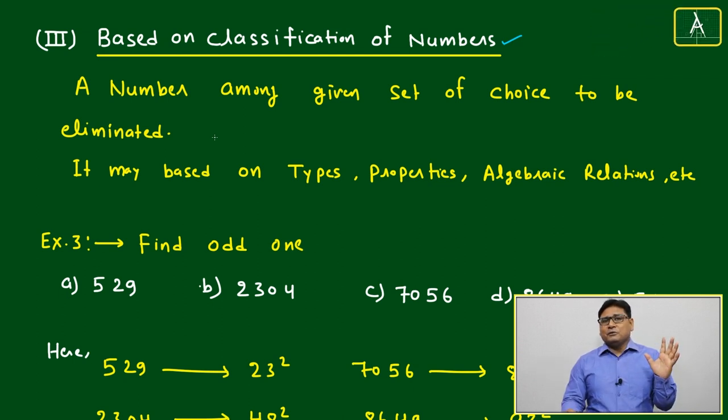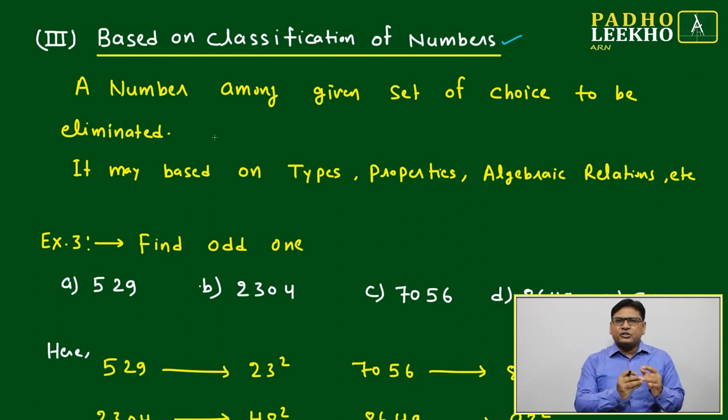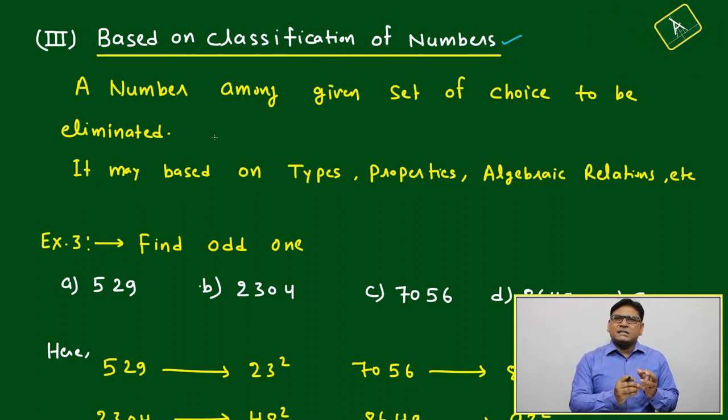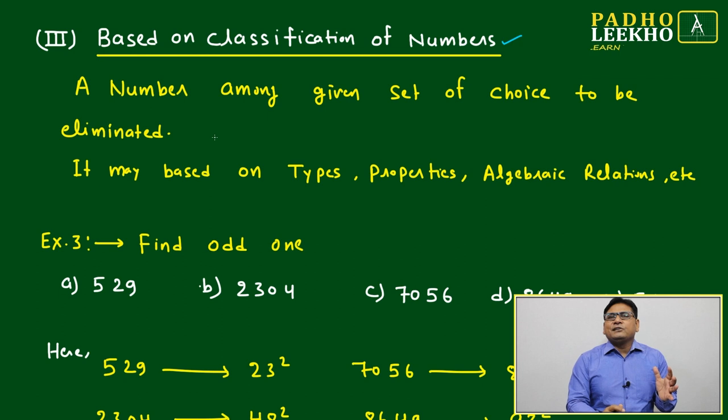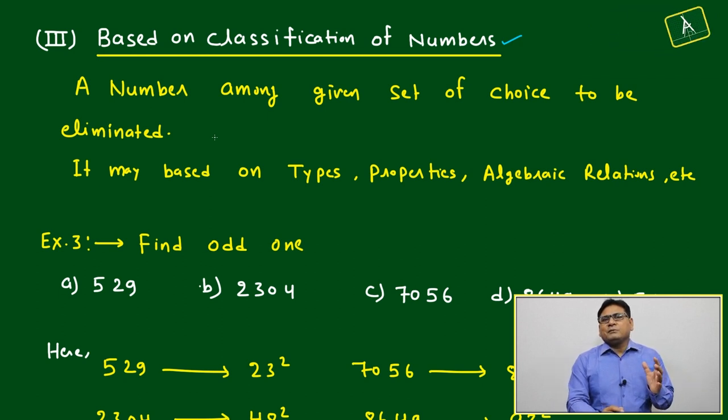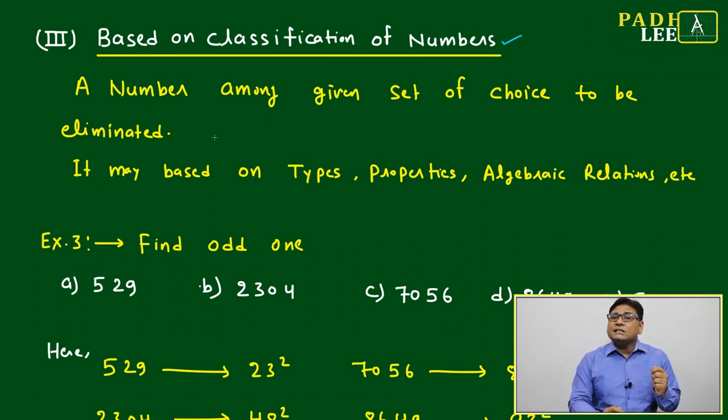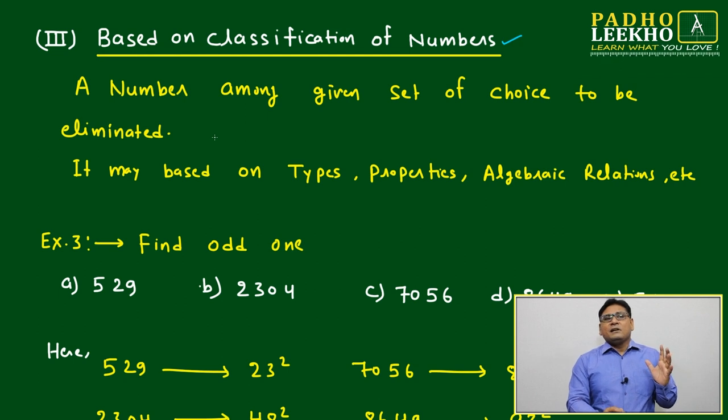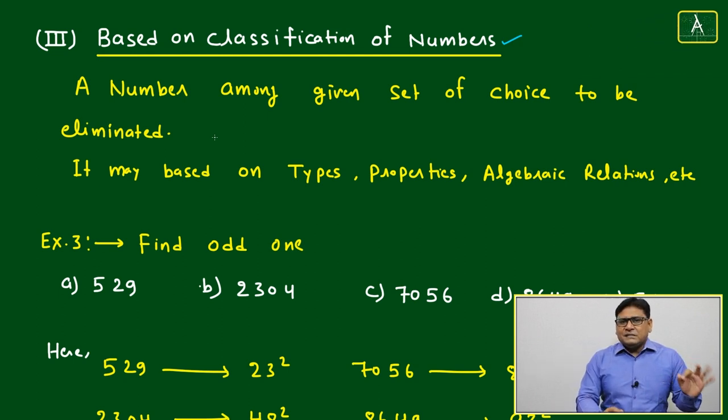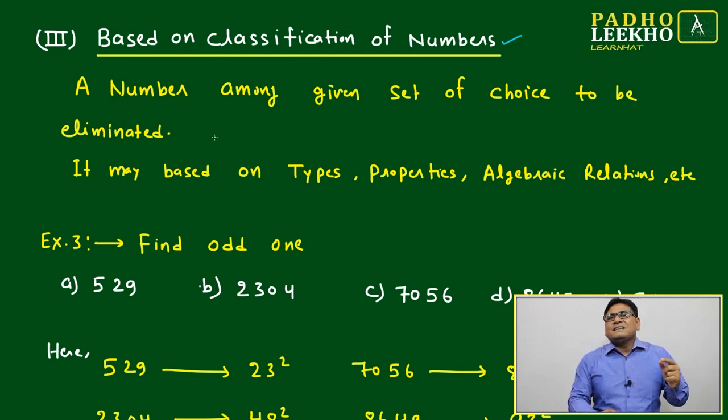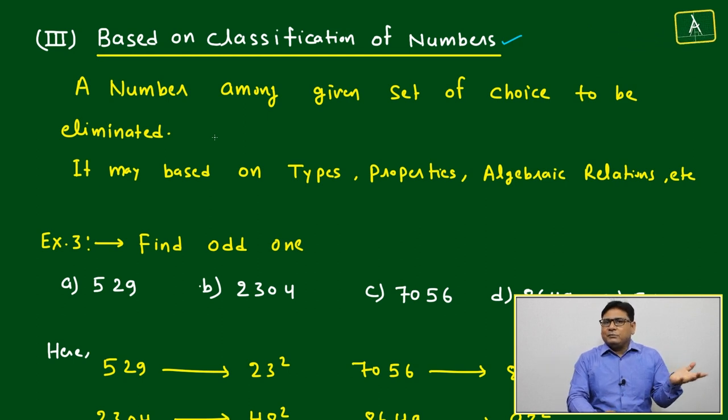Properties of numbers like perfect square, perfect cube, prime number properties, even number, odd number, how numbers can be interrelated with multiple types of arithmetic operations. All these you should be well versed, then you will be able to eliminate. First thing you will be able to find out what is the relation established among the given numbers.